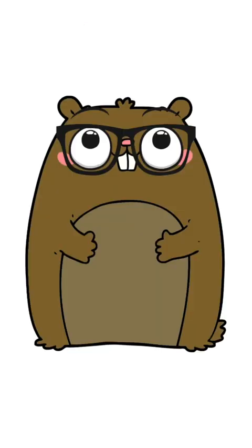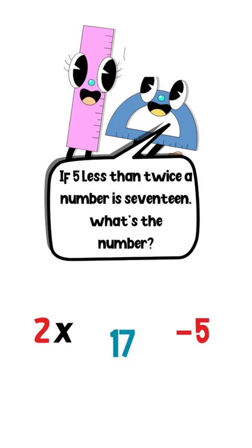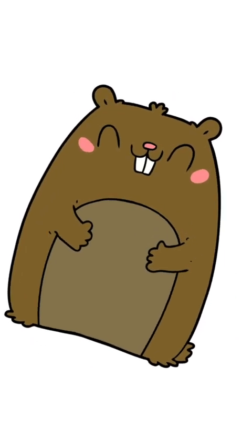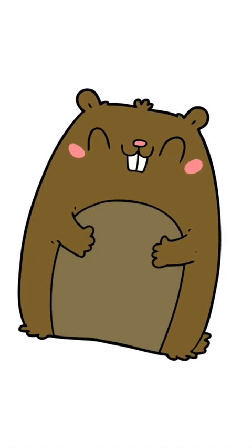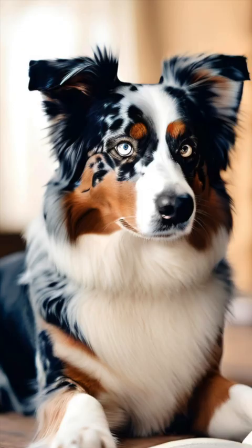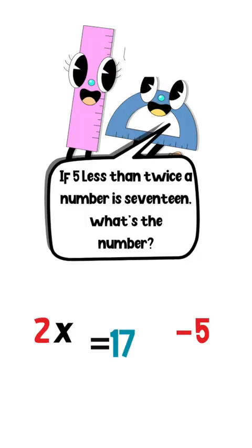So, now what? Well, let's read the sentence again. Now that we have all the math components. If 5 less than twice a number is 17, what's the number? So, how should we put these components together so they mean what this sentence says? You're asking the wrong rabbit. I don't think you're a rabbit. You're a gopher. But, anywho, usually when you hear the word is, you know that means equals. So, let's just stick an equal sign in front of the 17.